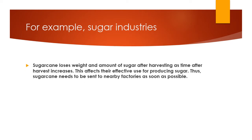Consider the example of a sugar industry. The raw material required is sugarcane, and the finished product is sugar. Sugarcane loses its weight and sugar content after harvesting as time passes. This affects its effective use for producing sugar. If it takes too long to reach the factory, the amount of sugar that can be extracted decreases.